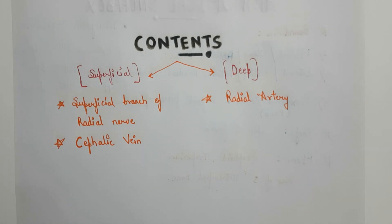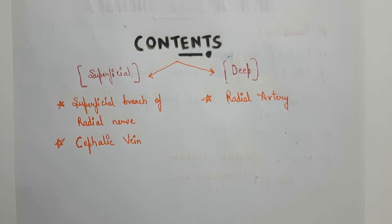The contents of the anatomical snuff box are divided into two categories: superficial contents and deep contents. The superficial contents include the cephalic vein and the superficial branch of the radial nerve, which is also a content of the cubital fossa. The deep structure is the radial artery.